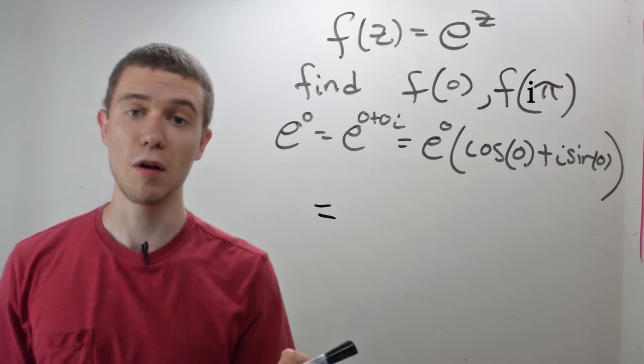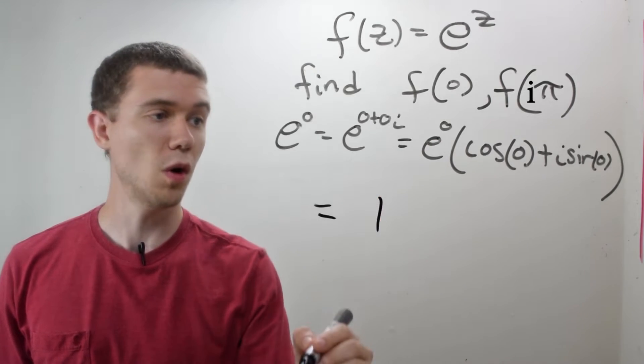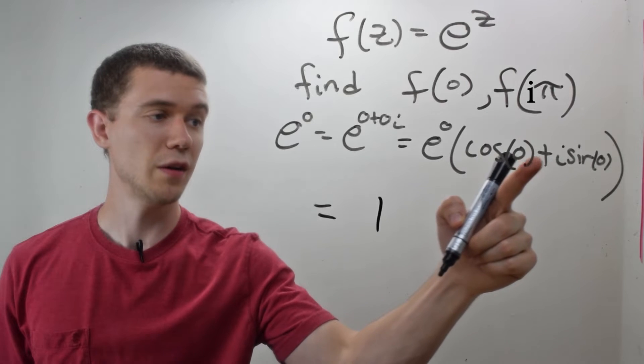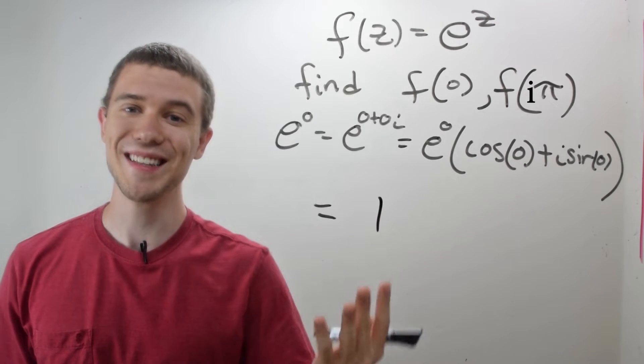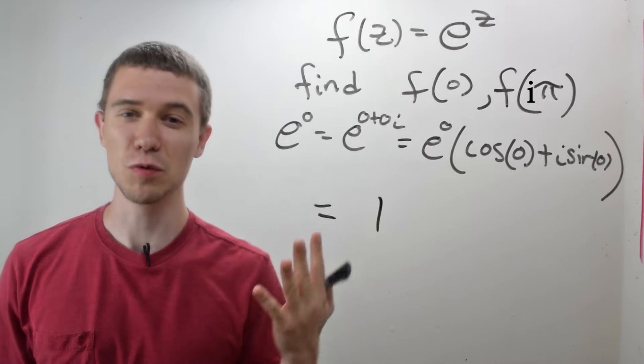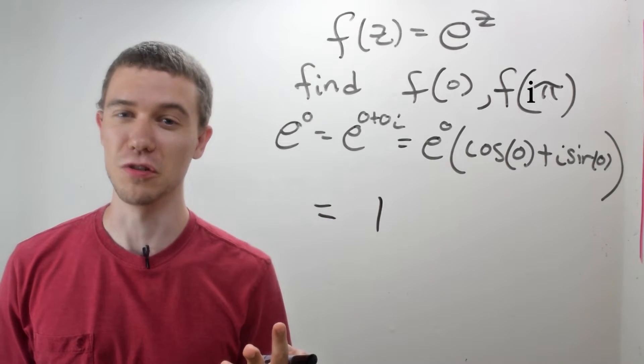Well, e to the 0, any real number to the 0 power is 1, cosine of 0 is 1, sine of 0 is 0, and there you go, e to the 0 is 1. Isn't that nice? That's what you kind of want from an exponential function.